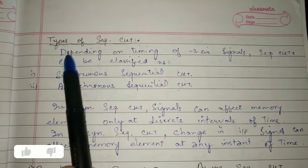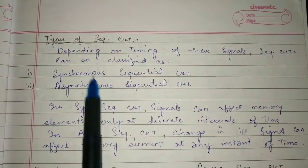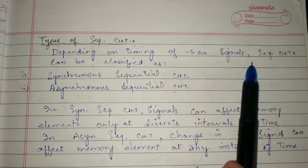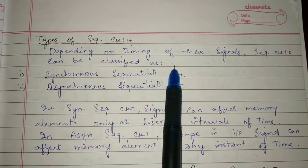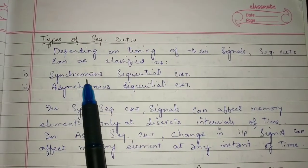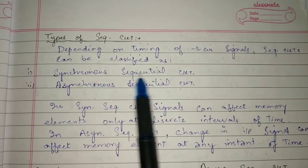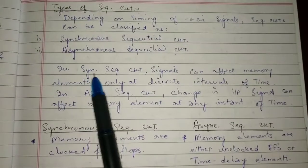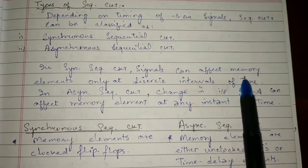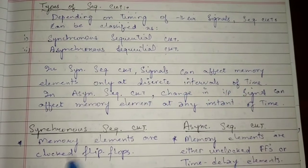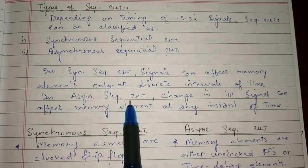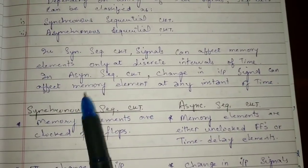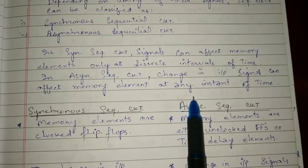Now let's discuss the types of sequential circuits. Depending on the timing of their signals, sequential circuits can be classified into two types: synchronous sequential circuits and asynchronous sequential circuits. In synchronous sequential circuits, signals can affect memory elements only at discrete intervals of time. But in asynchronous sequential circuits, a change in input signal can affect a memory element at any instant of time.